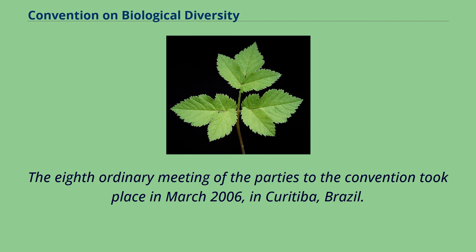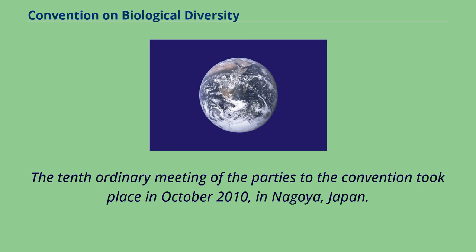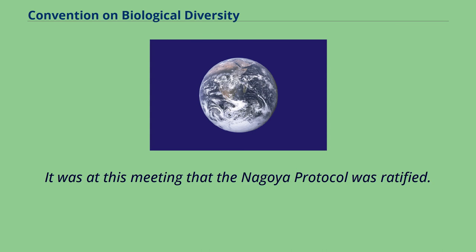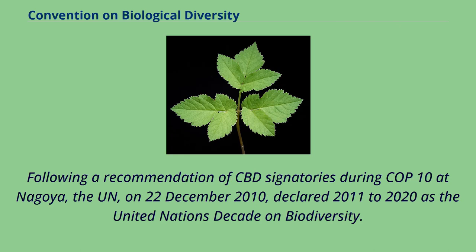The ninth ordinary meeting of the parties to the Convention took place in Nagoya, Japan. It was at this meeting that the Nagoya Protocol was adopted. 2010 was the International Year of Biodiversity and the Secretariat of the CBD was its focal point. Following a recommendation of CBD signatories at Nagoya, the UN, on December 22, 2010, declared 2011–2020 as the United Nations Decade on Biodiversity.